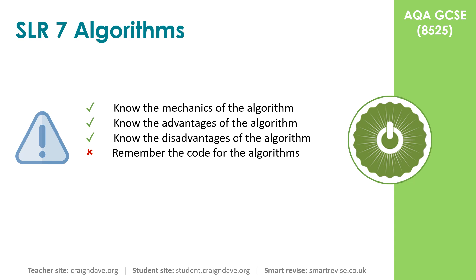The specification at GCSE requires you to know the mechanics of an algorithm. You should understand the advantages and disadvantages of using one algorithm over another to solve the same problem. However, at GCSE level, you're not going to be expected to remember the code line for line for a given algorithm. In the rest of this video, we're going to walk through an example of this algorithm step by step.